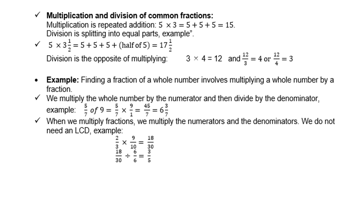When we multiply fractions, we multiply the numerators and the denominators. We do not need an LCD. Example: two times nine is eighteen, three times ten is thirty, and you can divide both by six to get three fifths.